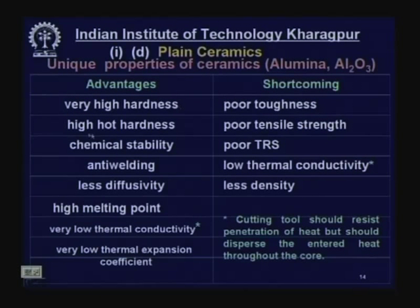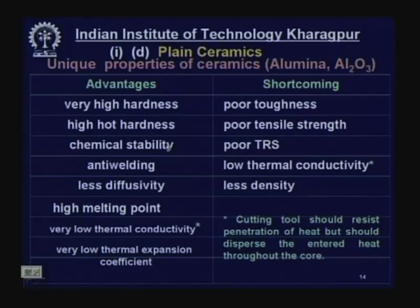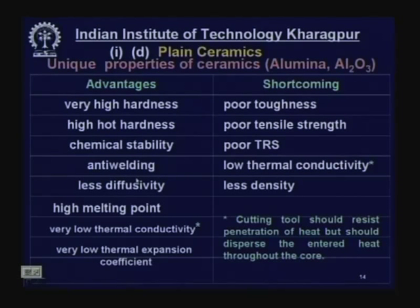Advantageous properties of plain ceramics like alumina include: high hot hardness — so hardness is retained at high temperature preventing plastic deformation; chemical stability — they do not react unfavorably with tool material or environment; anti-welding — inert to welding; less diffusivity — very good at high speed and temperature; high melting point; very low thermal conductivity; and very low thermal expansion coefficient, so internal stresses are less.